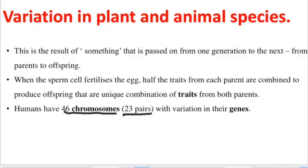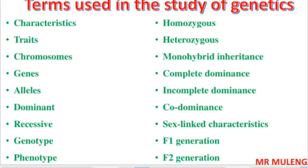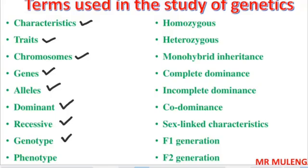Let us now look at the terms that are used in the study of genetics. These terms include: characteristics, traits, chromosomes, genes, alleles, dominant and recessive, as well as genotype and phenotype.